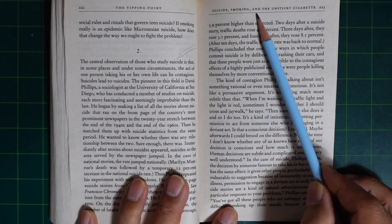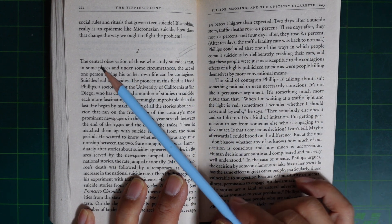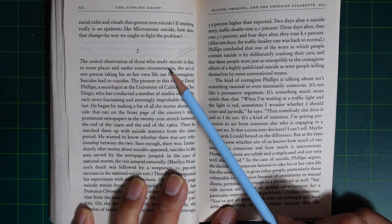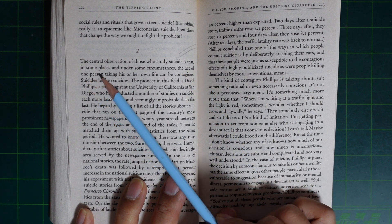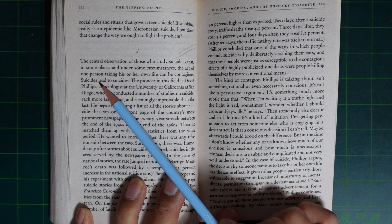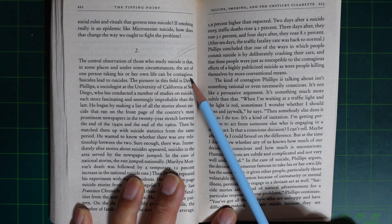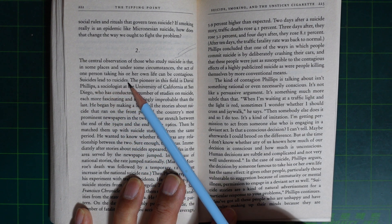Suicide, Smoking and Sticky Cigarette 2. The central observation of those who study suicide is that in some place or under some circumstance the act of one person taking his own life can be contagious. Suicide leads to suicide.